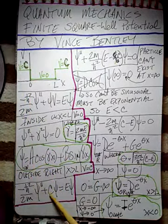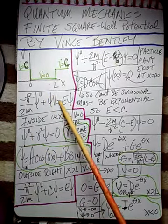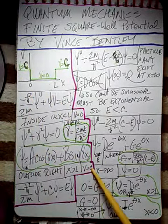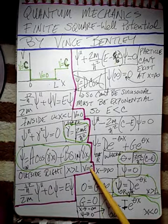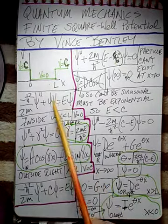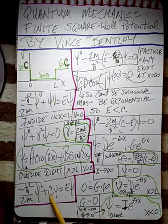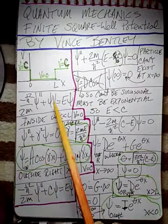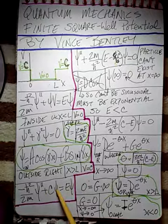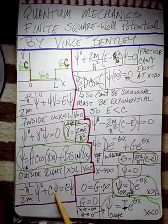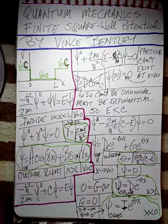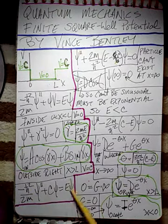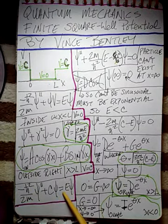Now we're going to do the outside. We'll have to go back to Schrödinger's equation. Over here the potential energy is equal to C, so we're going to take C and plug it in, writing V and putting it right there. We'll have to solve this differential equation right here.